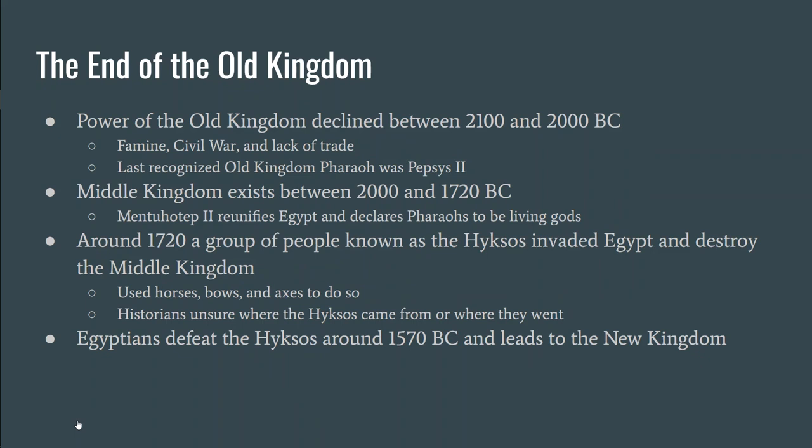All good things come to an end — the Old Kingdom is no different. Somewhere around 2100 BC, the power of the Old Kingdom declined. Some say things stagnated; famine and civil war developed. Eventually around 2000 BC, the old pharaohs died out. A man named Mentuhotep took over, reunified Egypt after the civil wars, and declared the pharaohs to be living gods — an upgrade. The Middle Kingdom lasted only about 300 years.